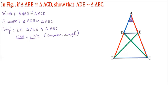Now you have to observe other corresponding parts — whether corresponding angles are equal or corresponding sides are in proportion. To prove the triangles are similar you can use three criteria: AA, SSS, or SAS criterion. Here, since triangle ABE is congruent to triangle ACD, we will use the SAS criterion.